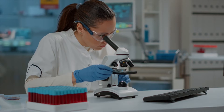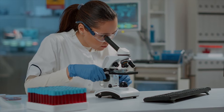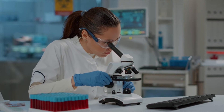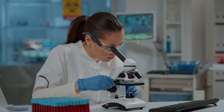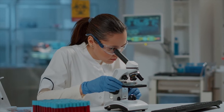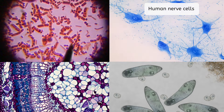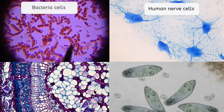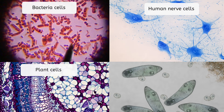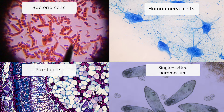Have you ever used a microscope or seen one? If you look at samples of living things under a microscope, you might see something like one of these. Here you can actually see cells from four very different types of organisms. These are human nerve cells. We also have some bacteria cells, plant cells, and some single-celled paramecium.